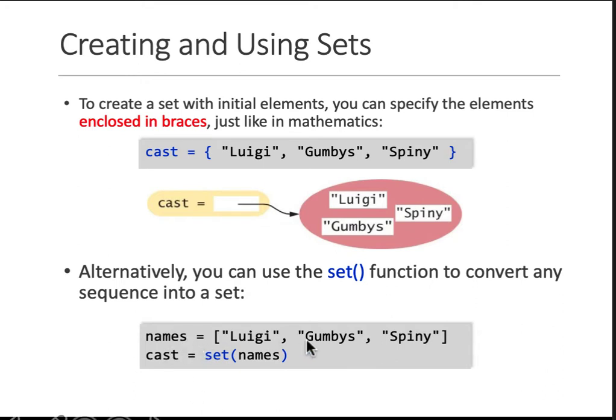So how do you do that? You take a list, you just put it in parentheses of the function called set, and then cast here is defined as a set of names. So names is different, cast is different, one is a list, the other is a set.